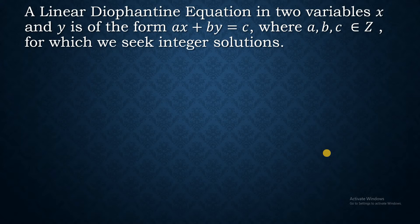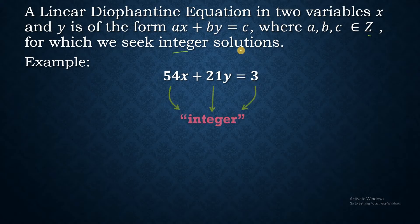A linear Diophantine equation in two variables x and y is of the form ax plus by equals c, where a, b, and c are all elements of the integers for which we seek integer solutions. So in this example, 54x plus 21y equals 3, the a value is 54, b value is 21, c value is 3. Note that all of these three are integers. And since we are treating this as a linear Diophantine equation, the x and y solution should also be integers.